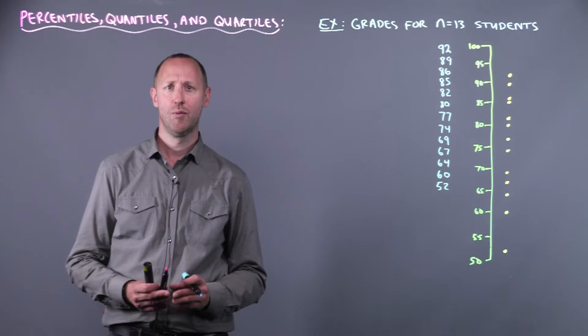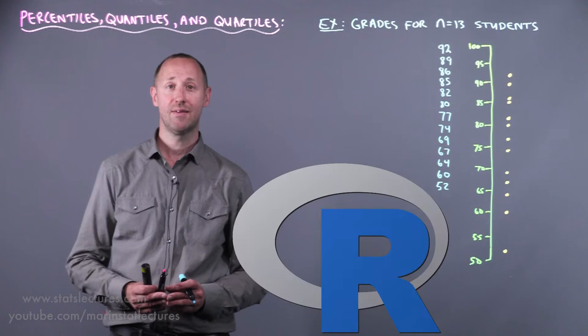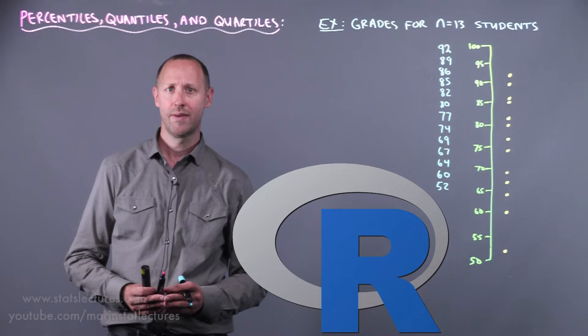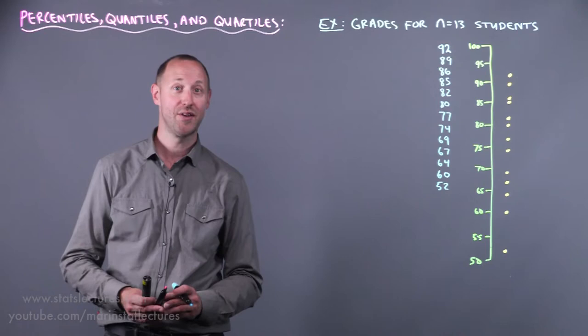We're going to focus on the concept and not the calculations and that's for a few reasons. The first being that typically we're going to calculate these using a piece of software and we're not going to do it by hand. And the second reason is the software that I use, the statistical software R, it has nine different ways of calculating a percentile or quantile.